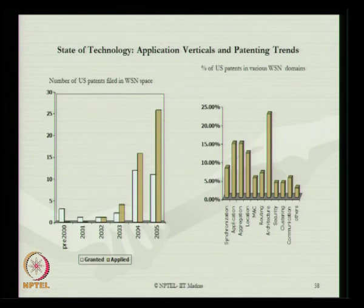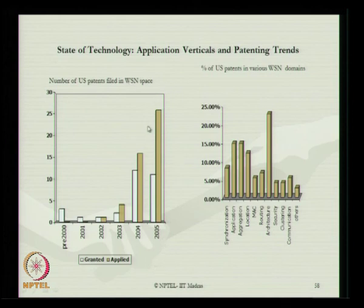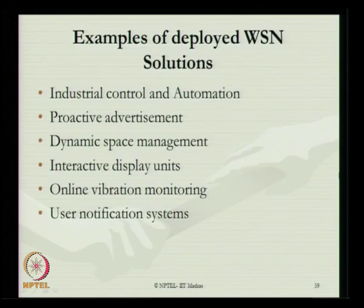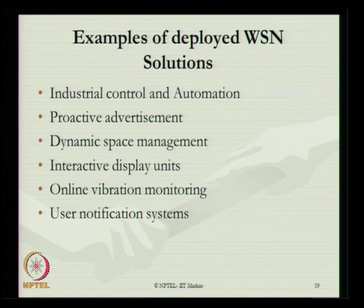Looking at the state of technology in terms of patenting and research in the US: the number of US patents filed in the wireless sensor networking space is on the increase. The percentage of US patents in WSN domains shows that system architecture development accounts for closely about 25 percent. Examples of WSN deployed for intelligent solutions include industrial control and automation, proactive advertisements, dynamic space management, interactive display units, online vibration monitoring, and user notification systems.